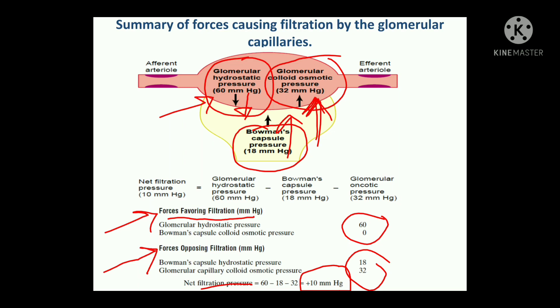These Starling forces are acting on the glomerular capillaries, and this is how you calculate the net filtration pressure: forces favoring filtration minus forces opposing filtration.